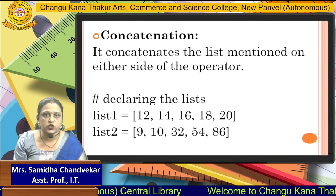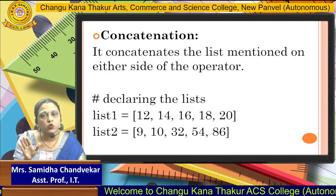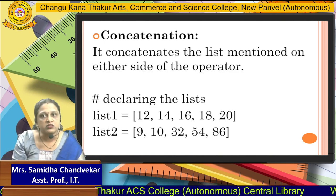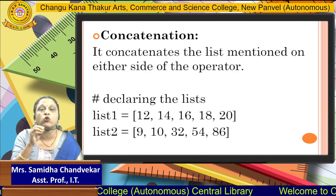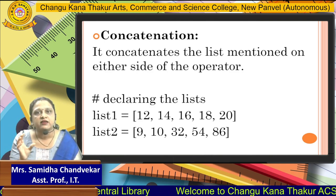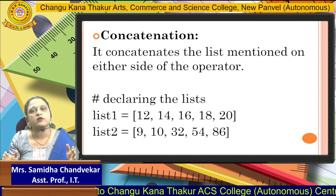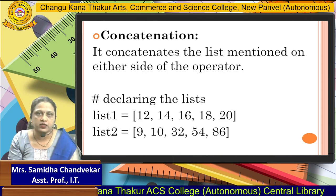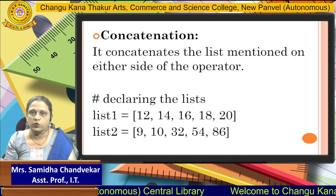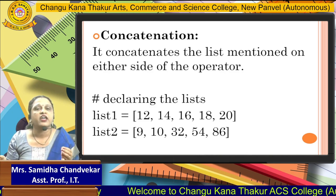Next is concatenation. We have 2 lists and we want to combine them. For example, we have 2 divisions — FYA division and FYB division — and we want to mix those divisions. For some purpose, we want to make one group of FY students, FYIT students. So we need to add or merge these 2 lists. List1 is [12, 14, 16, 18, 20] and list2 is [9, 10, 32, 54, 86]. When you are combining them, there is a concatenation operator.